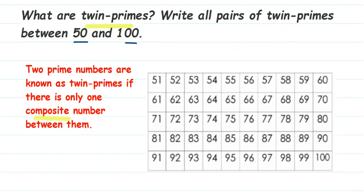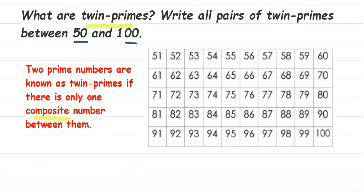Now we need to find the twin primes between 50 and 100. First, let me mark all the composite numbers. Every even number is composite, so I'm cancelling all the even numbers since they are not prime. Also, every number ending in five goes in the five-times table, so 55, 65, and similar numbers are also composite.